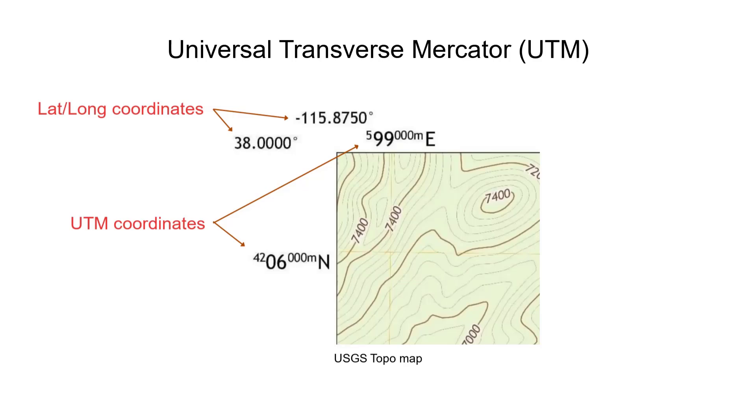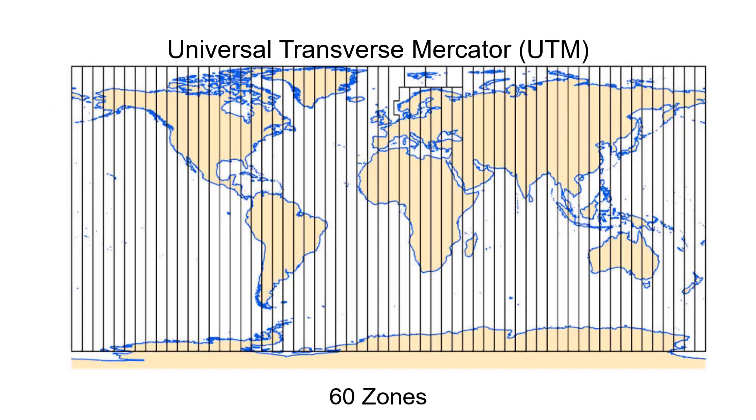Conversions and measurements are straightforward. However, distortions will increase moving out of the zone and as each zone is an individual projection, zones cannot be combined. Therefore, UTM is not suitable for large areas covering several zones.